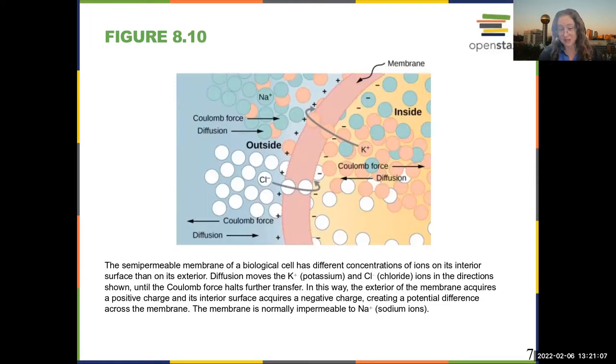A really cool application is that you can actually model a lot of neurons as being similar to a capacitor, because there is a net negative charge inside the cell and a net positive charge outside of the cell.